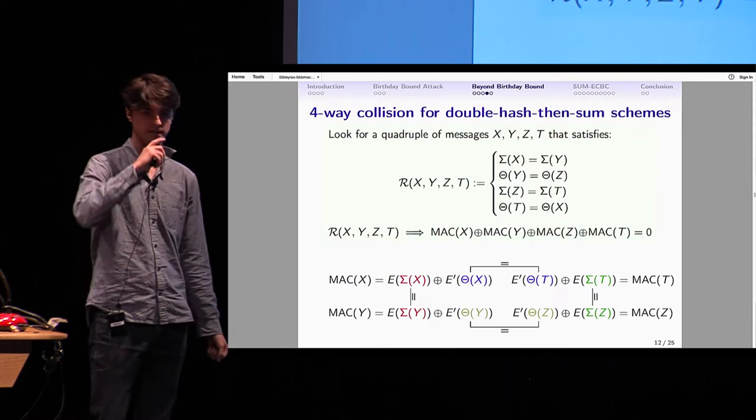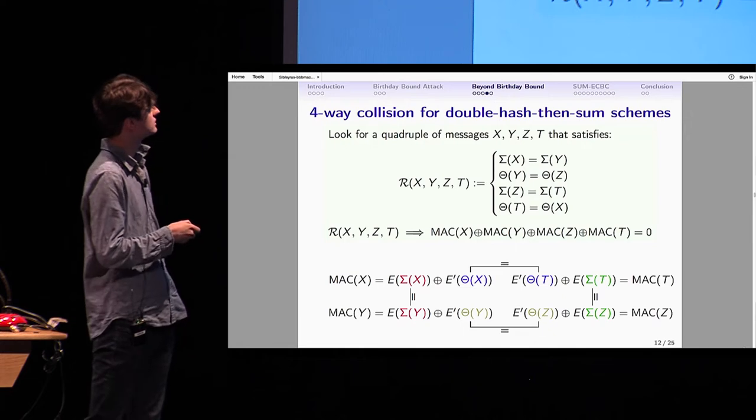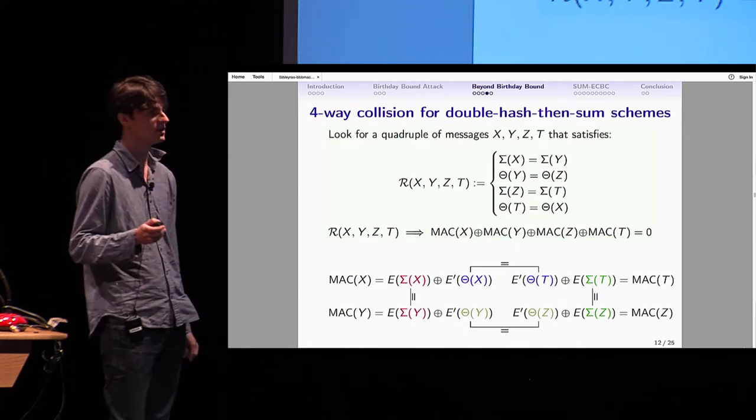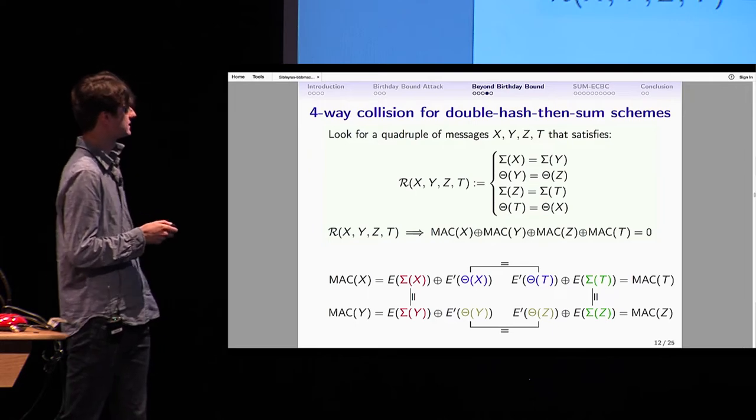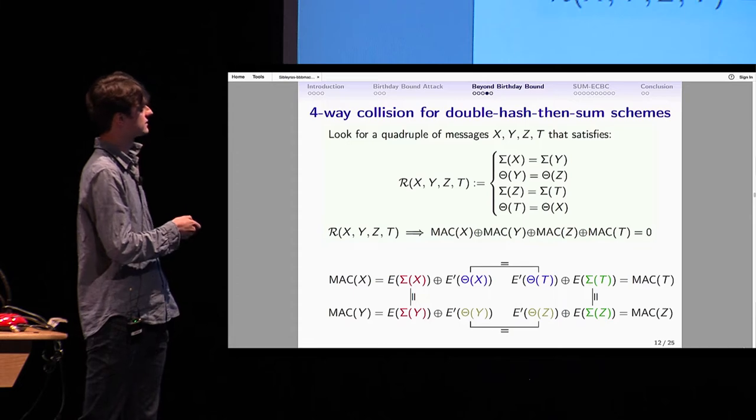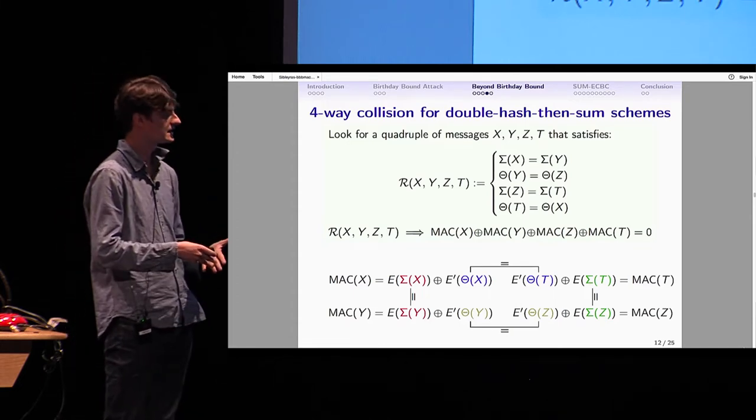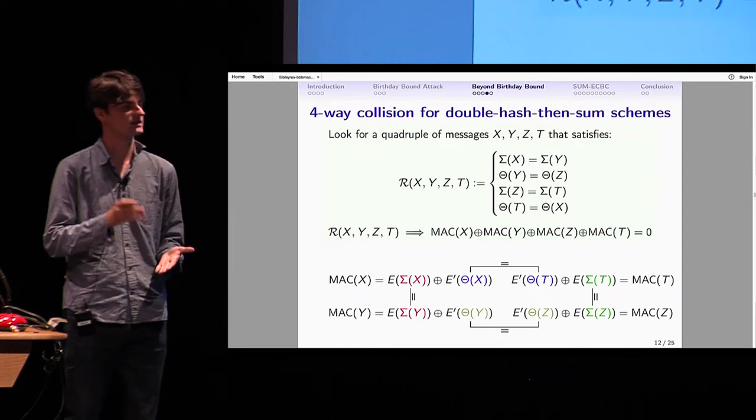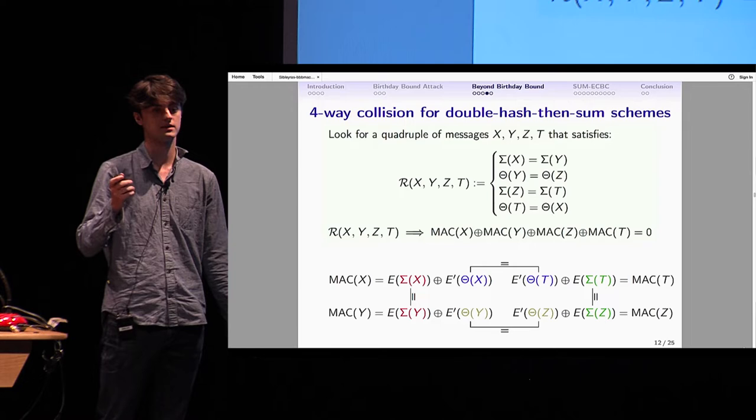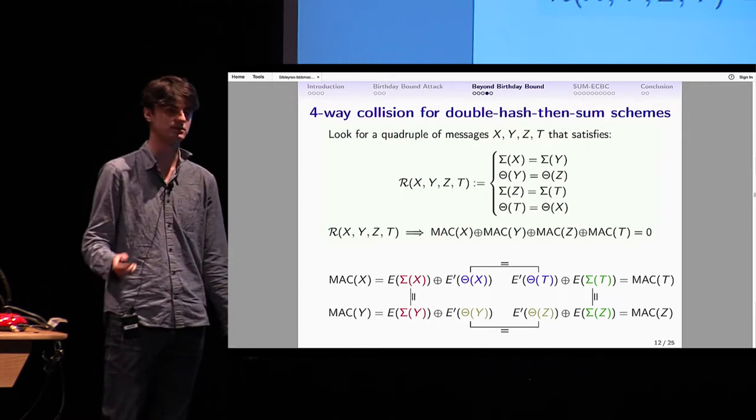How does this approach work? We look for a relation of this kind. Remember for ECBC, we looked for a pair of messages X, Y so that σ(X) = σ(Y). Now we look for a quadruple of messages X, Y, Z, T such that it follows the relation R. So σ(X) = σ(Y), we keep that. But also θ(Y) = θ(Z), σ(Z) = σ(T), and θ(T) = θ(X). Because this directly implies that the MAC of X, Y, Z, T will sum to zero.